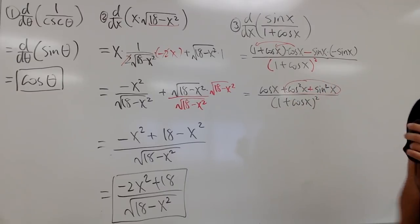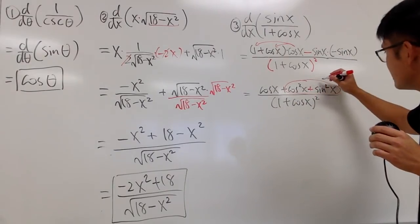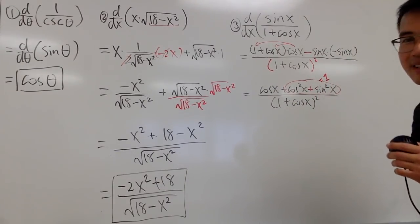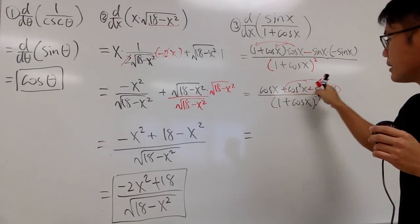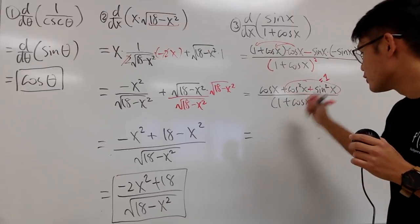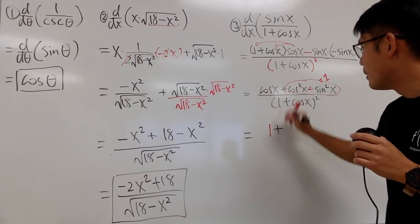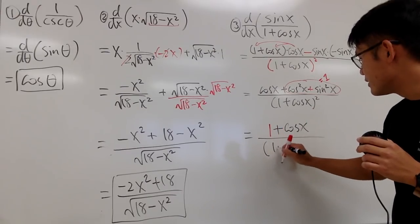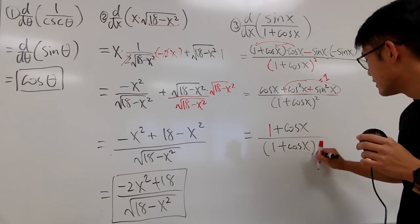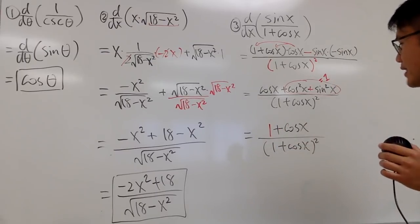Right here. What can we do? This is nicely equal to 1, isn't it? So, yes, we can do something about this. So, we can write this as cosine x plus 1. And, let me just write down the 1 first, if you don't mind. 1 plus cosine x over parentheses 1 plus cosine x squared. And, the reason I want to do that is so,